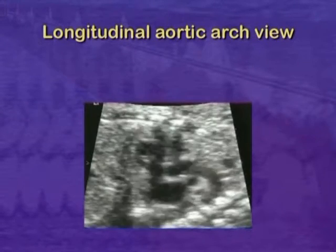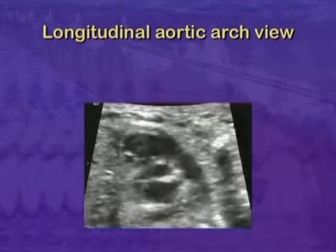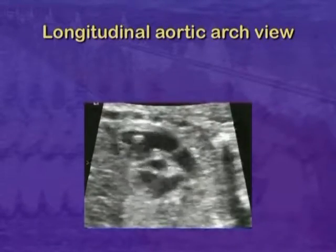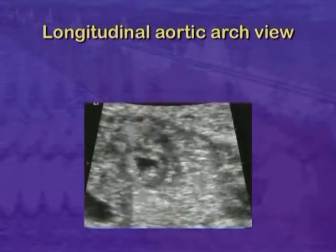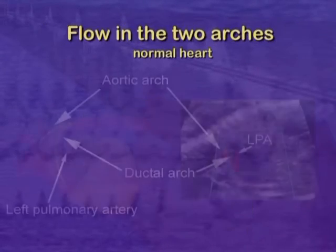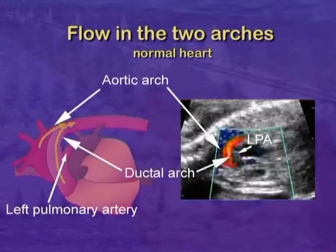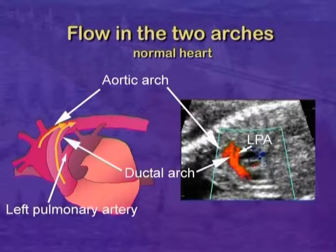The true aortic arch encloses the right branch pulmonary artery within its curvature, whereas the pulmonary artery encloses the left ventricular outflow tract. Normally, blood flow into both great arteries is away from the heart.